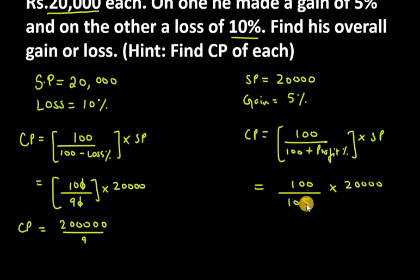So it will be 100 over 105 into selling price, which is Rs. 20,000. Now when you solve this you get the answer as 4,00,000 over 21. Cancel with 5 - it becomes 21 and 4,00,000.